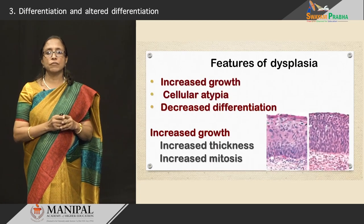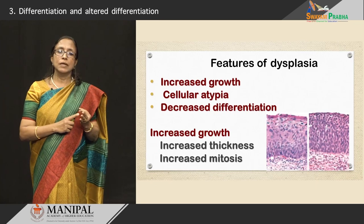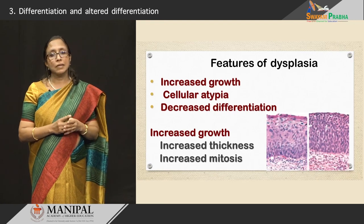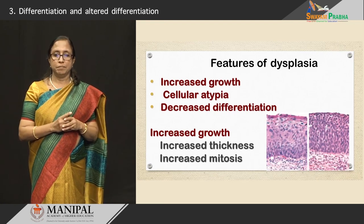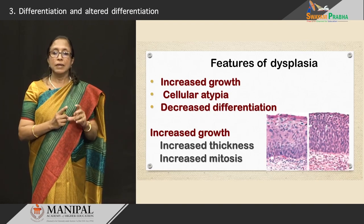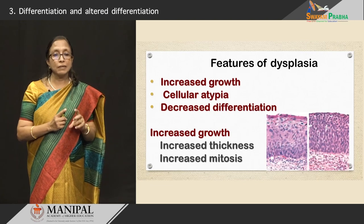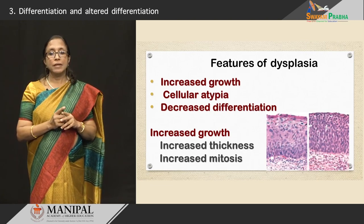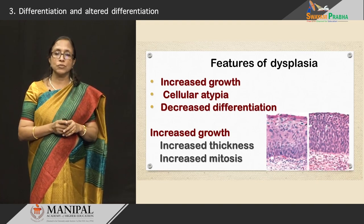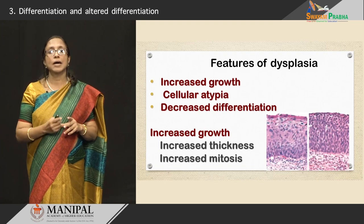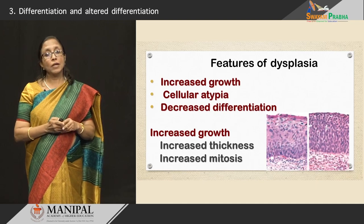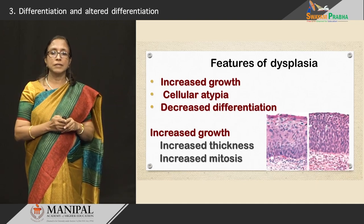Looking at the features of dysplasia: the first is increased growth, meaning an increase in the thickness of the epithelium, similar to hyperplasia. There is also increased mitosis, meaning the number of mitotic figures is more, showing that cells are proliferating rapidly. However, there are many differences from hyperplasia in dysplasia.